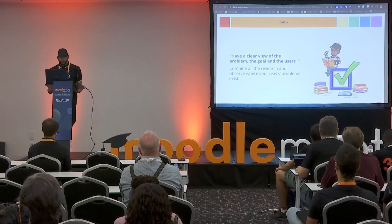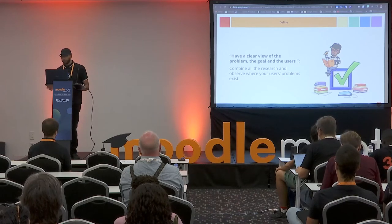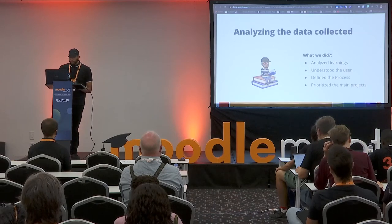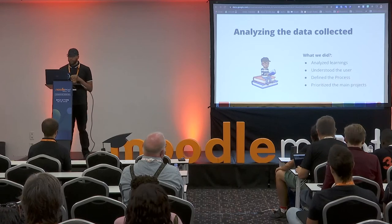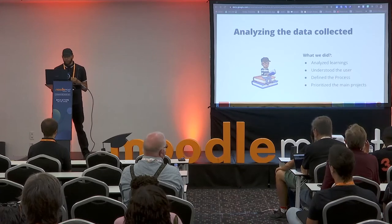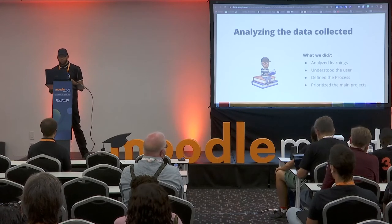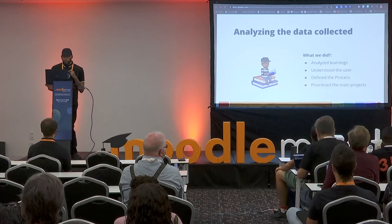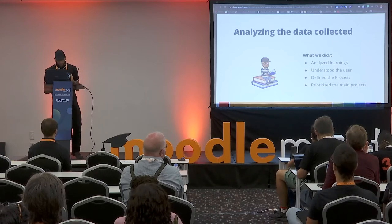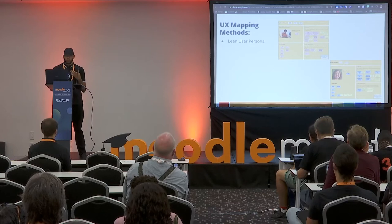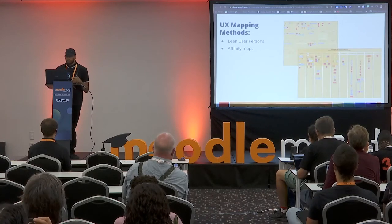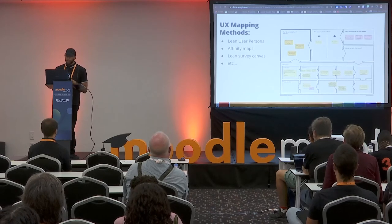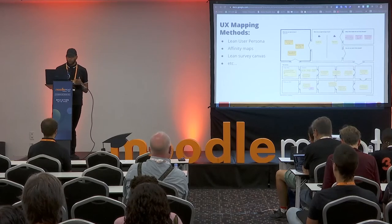The definition phase consists of combining research and learnings from the previous phase and looking at where the user problem exists. We analyzed and synthesized the learnings, gathered insights and feedback to understand user needs, defined the process, steps, methods, and way to work, and defined the main fields and projects to work on. In this phase, we used mapping and brainstorming methods such as user personas to understand users, affinity maps to compile and categorize different insights, and learn survey canvas to plan surveys and obtain missing information.